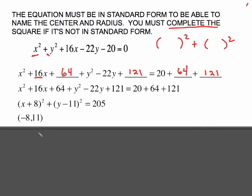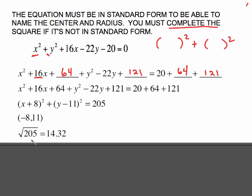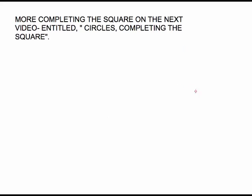Now it's in the correct form. Pull out 8 and 11 for the center — remember, change the sign: that was plus 8, so it becomes negative 8; change that sign to positive 11. The center is (negative 8, 11) and the radius is the square root of 205. It doesn't simplify radically, but your calculator gives 14.32. There's more completing the square on the next video entitled Circles, Completing the Square.